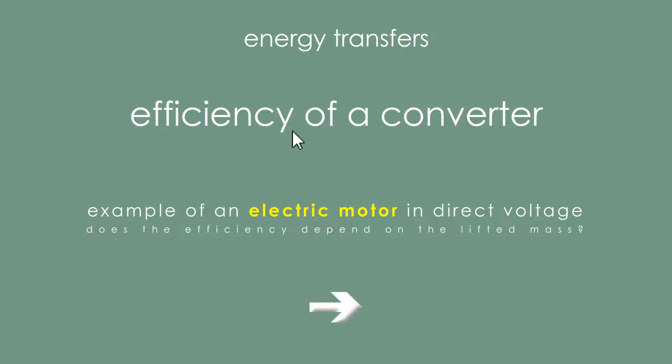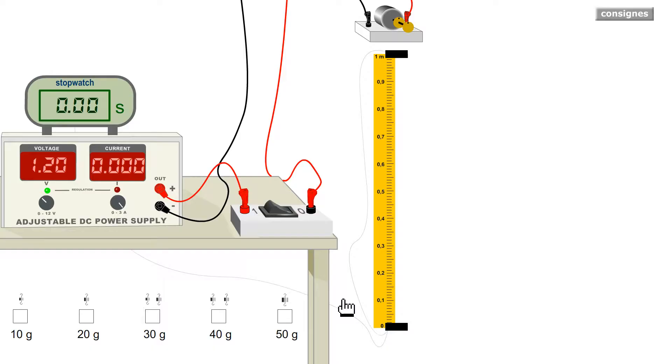A few words on the concept of efficiency. Hello everyone. Welcome to PCCL Physics Chemistry. I will be interested in that of an electric motor. It consumes electrical energy, it produces mechanical energy. The ratio of the second to the first is called the efficiency.